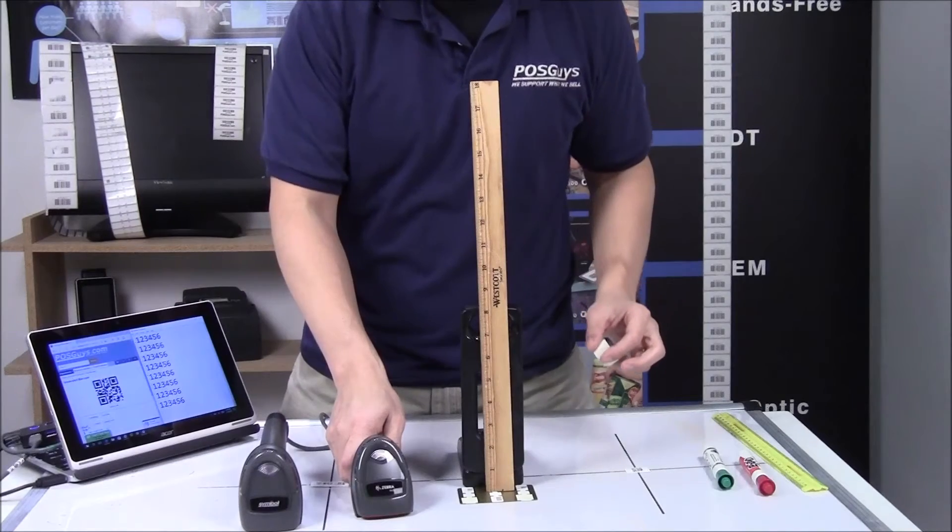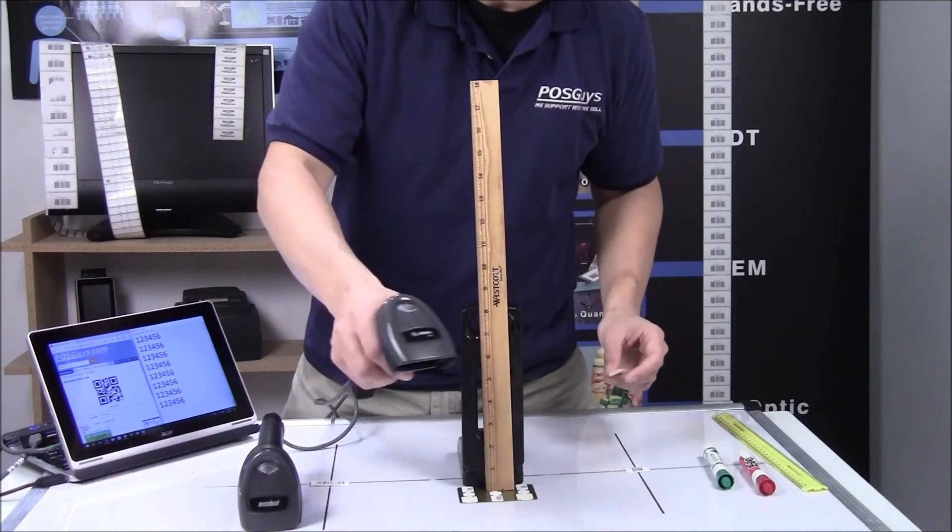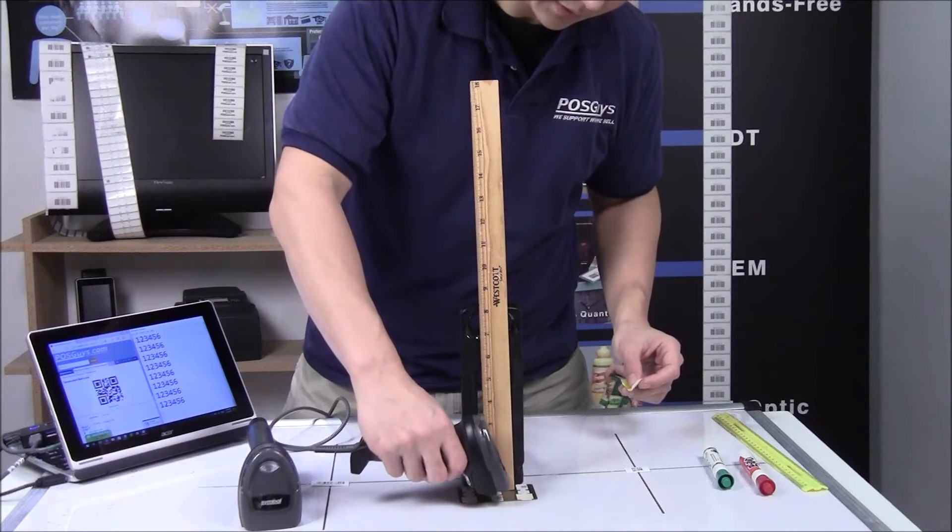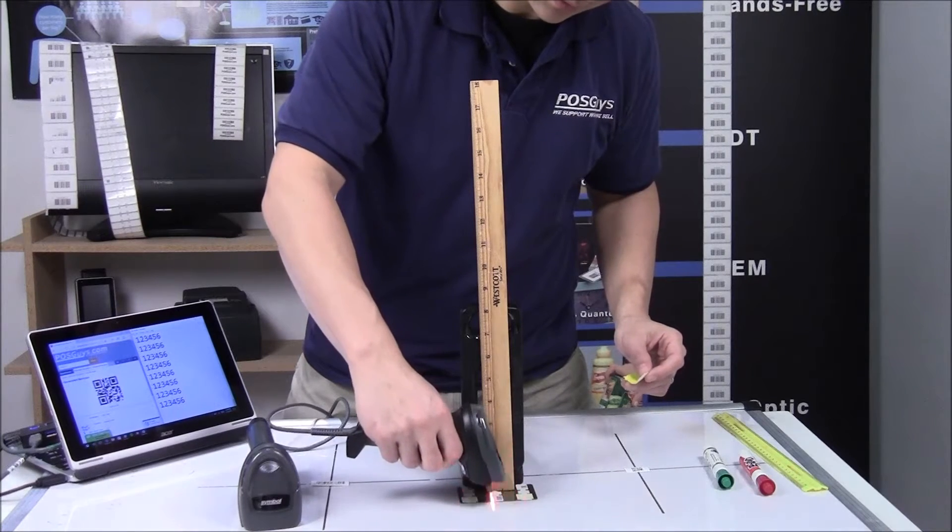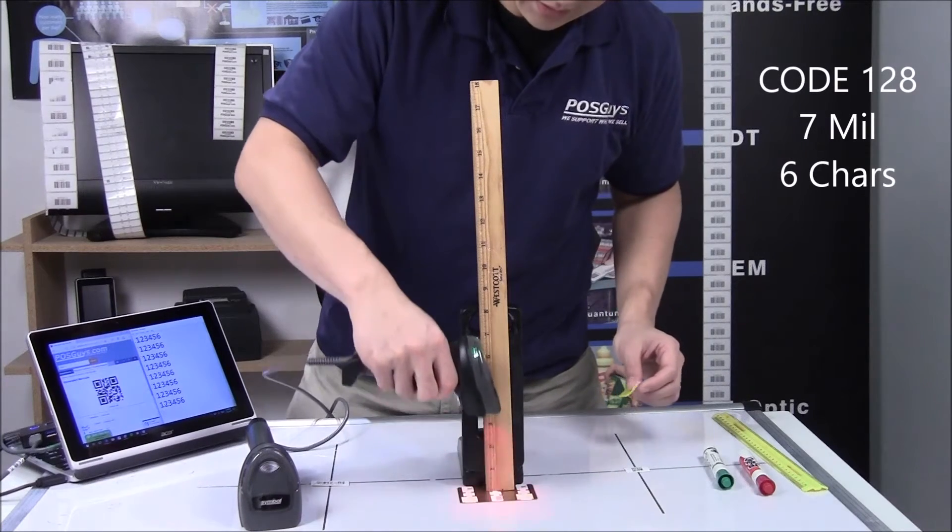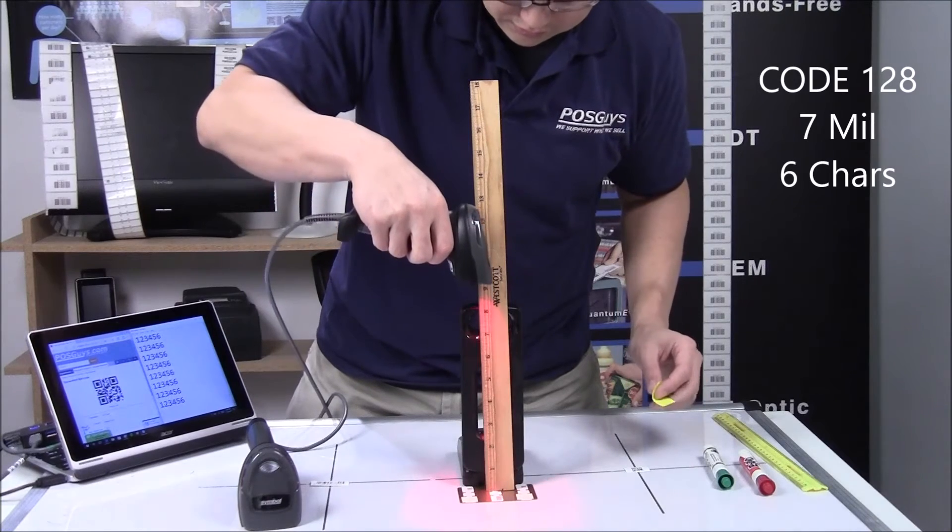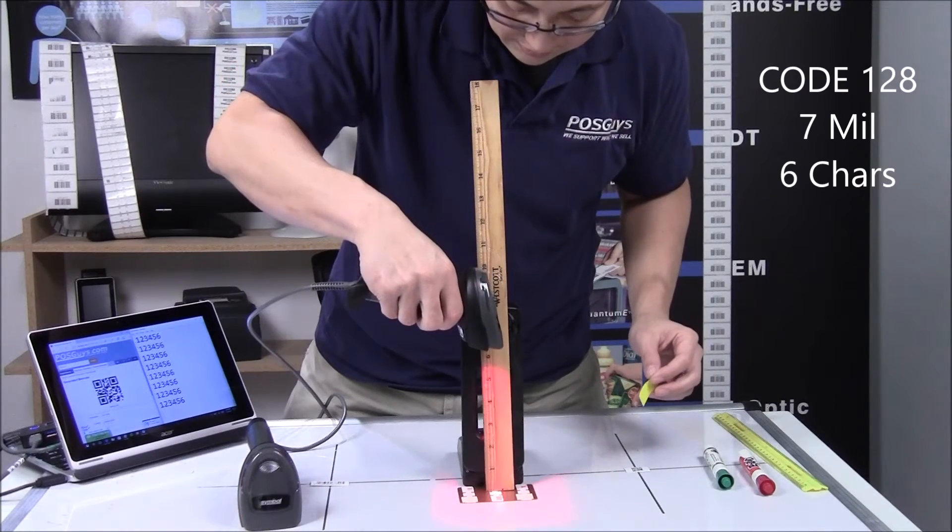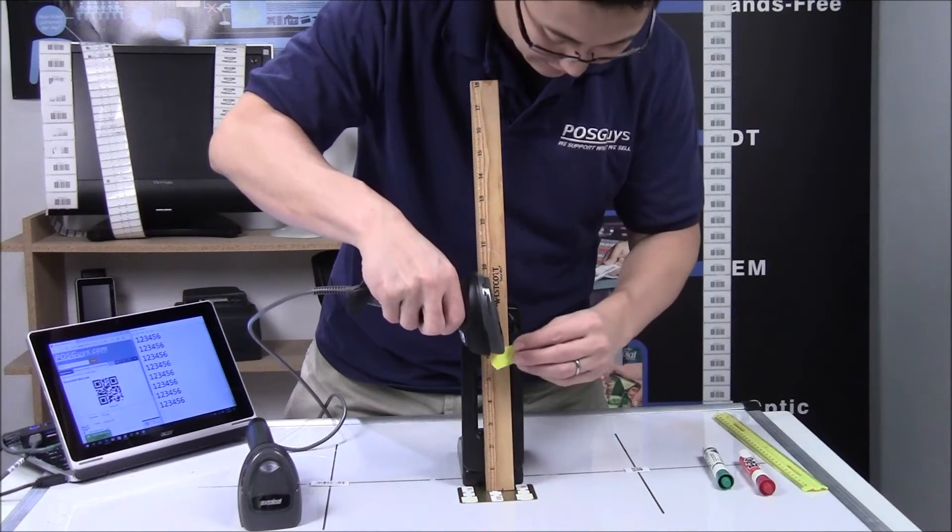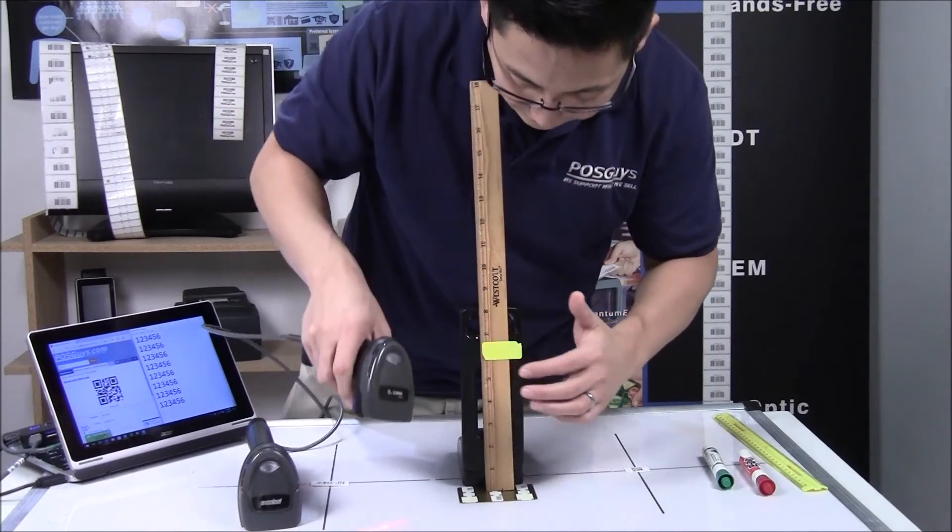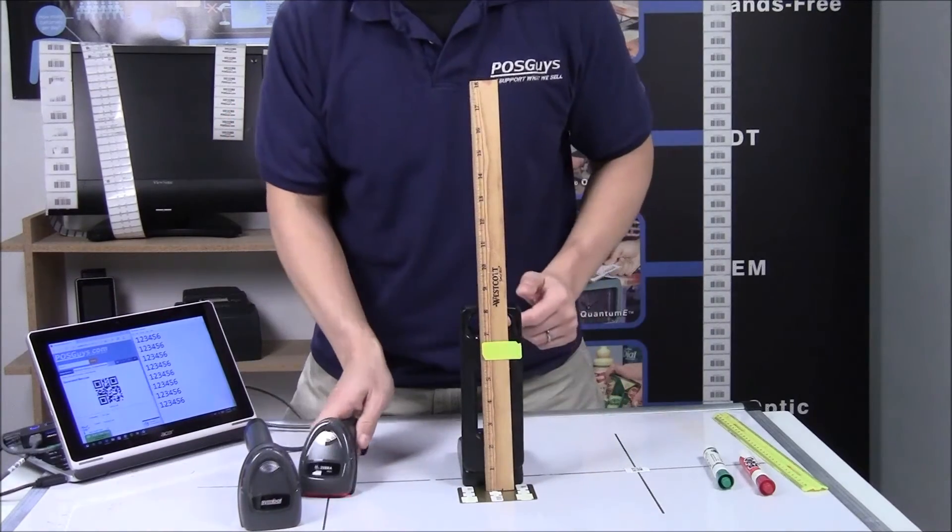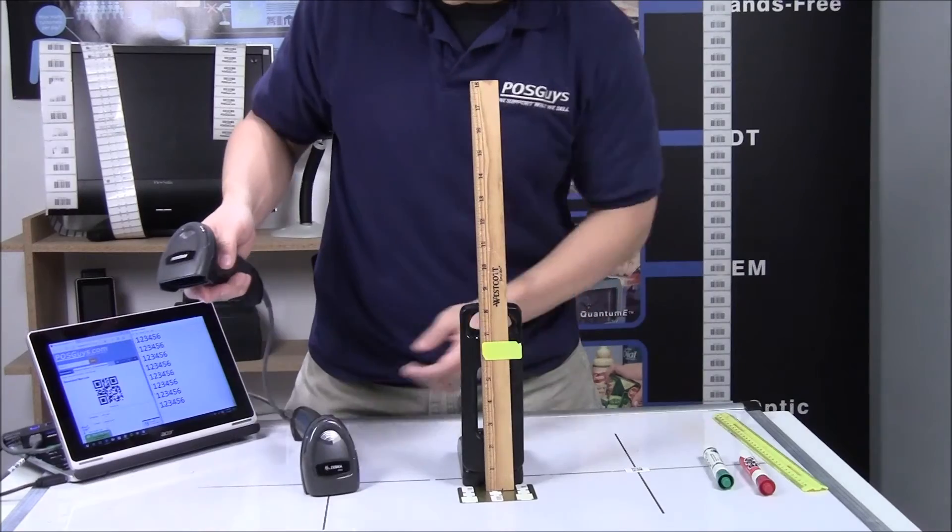The first test we're going to do is a basic range test. So, with the 22, you can start from about an inch back and then you can go about there. So, about six inches back on a 7mm barcode. And a 7mm barcode is pretty tiny.